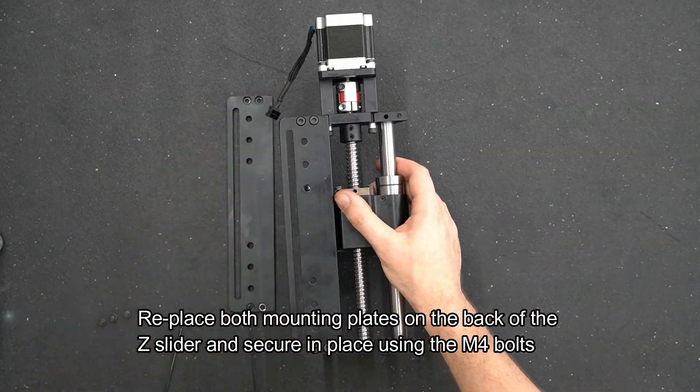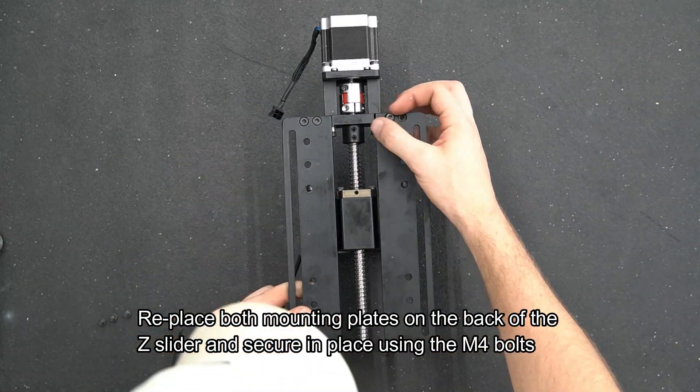Place both mounting plates back on the back of the Z slider and secure them using the M4 bolts.